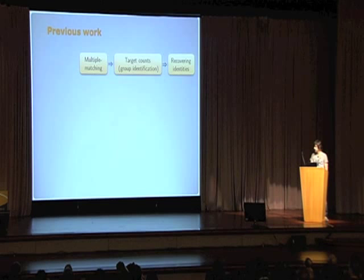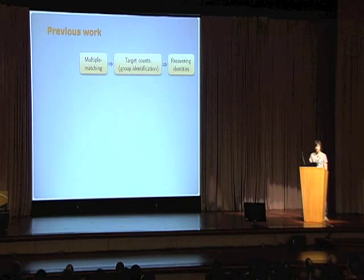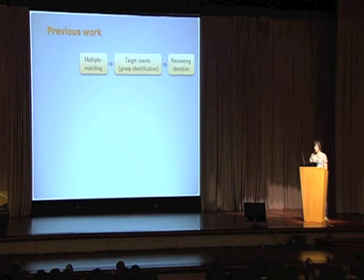We can break up the system into three stages, which have appeared in one form or another in the literature before. The first stage matches the targets and decides where they merge or split. The second identifies the groups. And finally, the third matches individual targets across the groups. I will describe them in more detail later on.